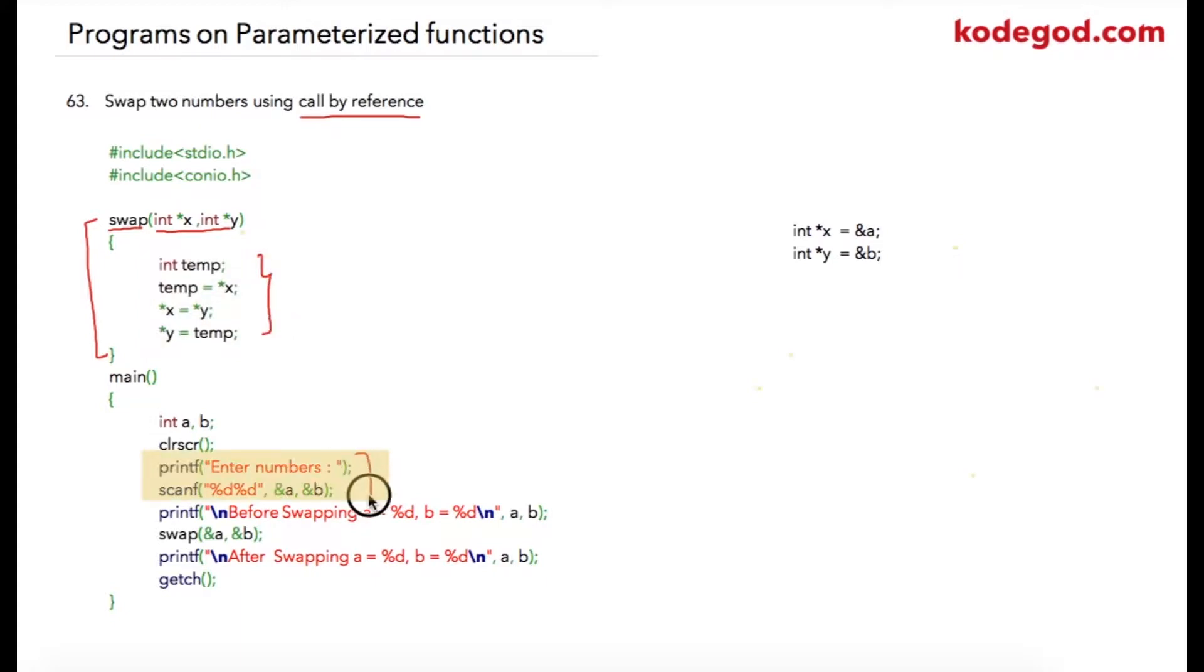But let us start from the main. I am asking user to enter two numbers a and b, so value that user is going to enter will be stored at address location of a and address location of b. And then I am just simply printing before swapping: a is equal to value of a and b is equal to value of b.